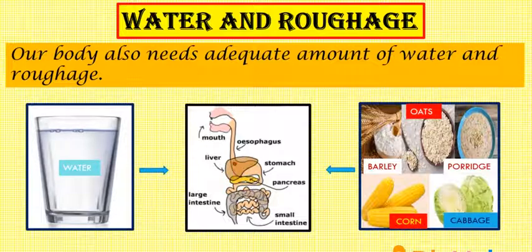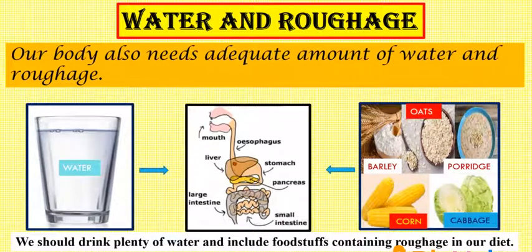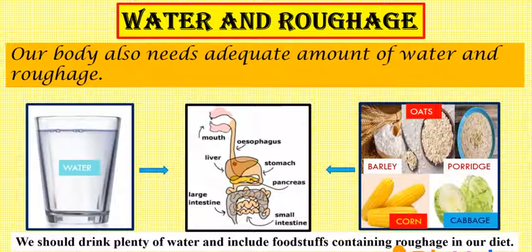Along with water, we should also include roughage in our diet. Roughage is the undigested part of plant food and it helps in moving food easily through our digestive system and in the removal of wastes from our body. We can get roughage from whole wheat flour, oats, dahlia, corn and cabbage, etc.